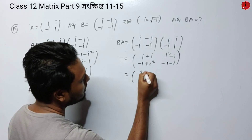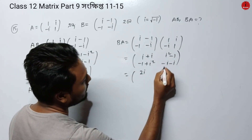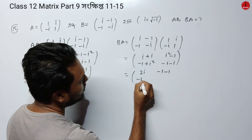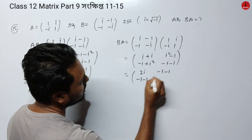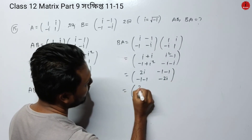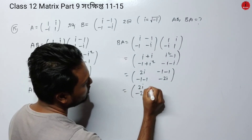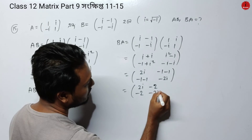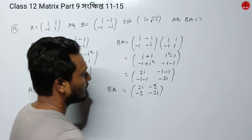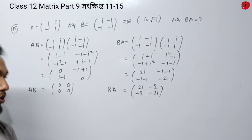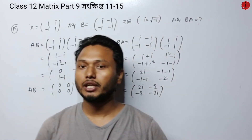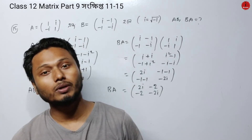After computing both AB and BA, we find that the two products are not equal. This confirms that matrix multiplication is not commutative in general, and specifically AB is not equal to BA for these matrices.